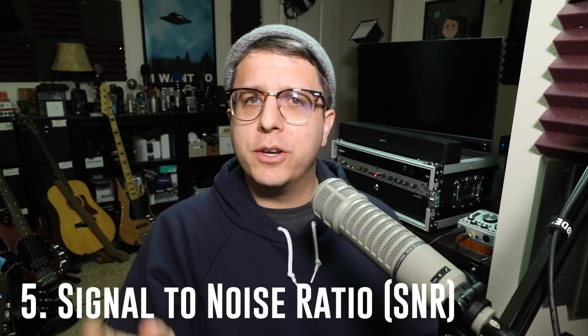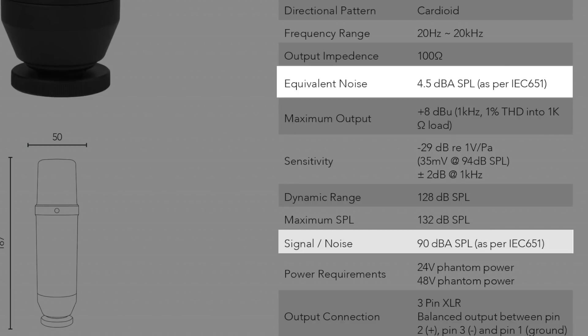Number 5: the signal-to-noise ratio. This spec is telling you the ratio of the desired signal to the amount of self noise generated by the microphone. Therefore, the higher the number, the better — it just means you're getting more signal of what you're actually recording against the self noise of the microphone.